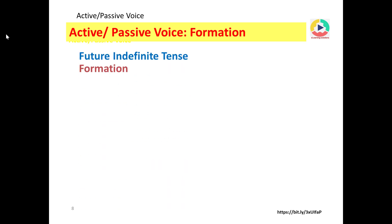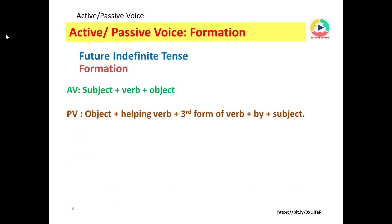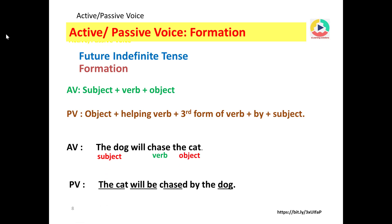In future indefinite tense, active voice: subject + verb + object. Passive voice: object + helping verb + third form of verb + by + subject. Note that in all tenses the third form of the verb remains the same — only the helping verb changes. Example: active voice — the dog will chase the cat. Passive voice — the cat will be chased by the dog. The helping verb in future tense is will be.